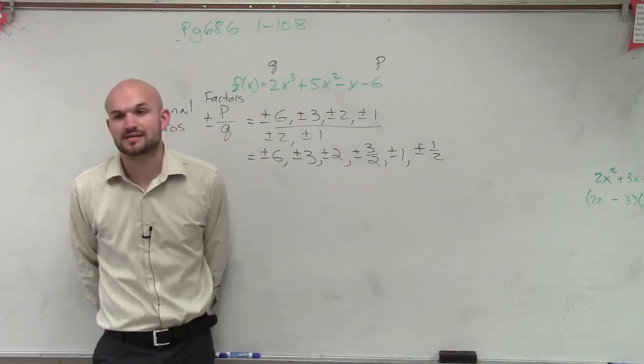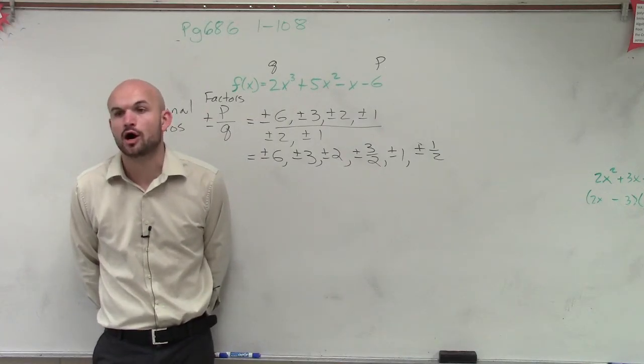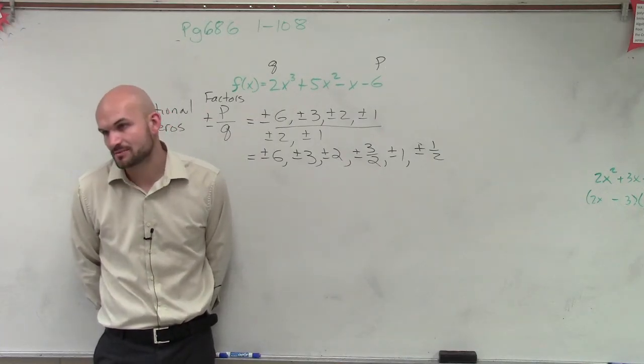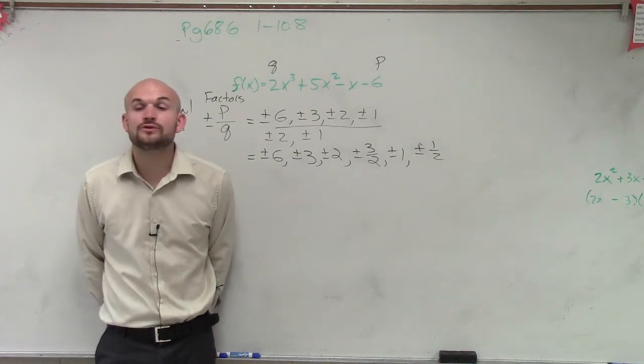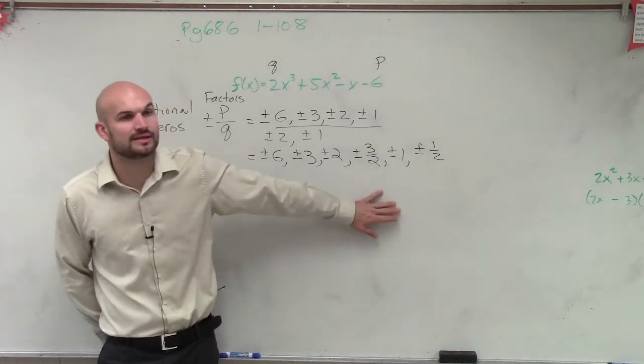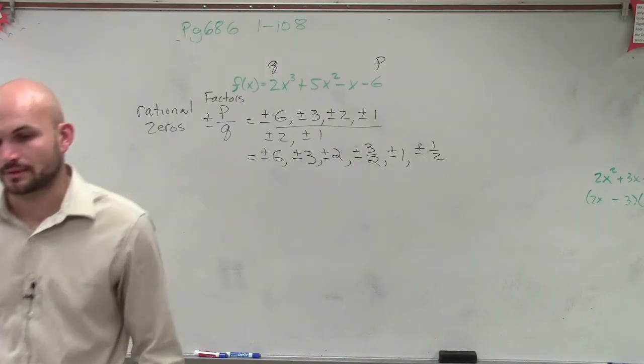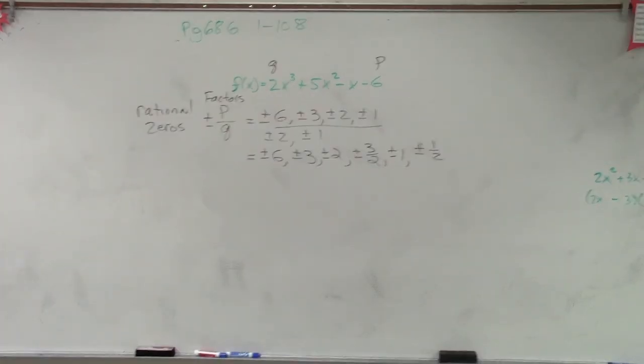These are for your possible rational zeros. So these are just possible. We have not shown that any of them are a zero yet. They're just possible. So if you do have a rational zero, it's going to be one of these. Are you going to show us the zero? I don't know.